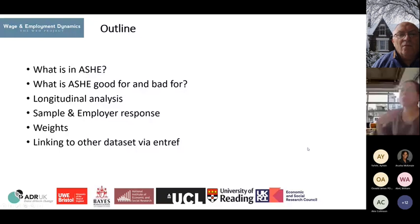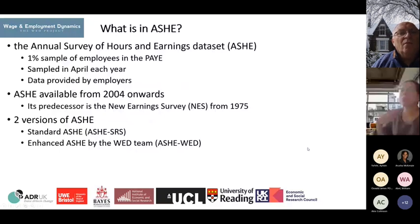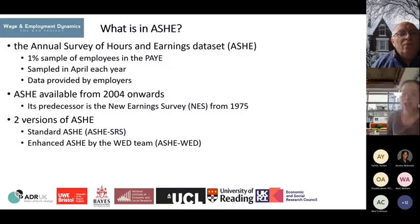ASH is the Annual Survey of Hours and Earnings. It is a 1% sample of employees in the PAYE system, sampled in April every year. The data is provided by the employer, so it is quite reliable. ASH is available from 2004 onward, and its predecessor is the New Earnings Survey, which started from 1975.